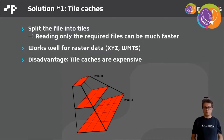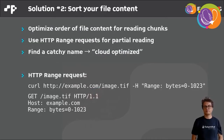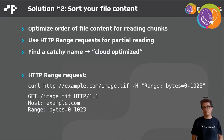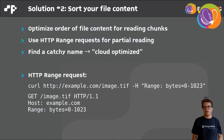So we're looking for another solution, and this is cloud optimization — which is, simply put, just sorting your file content. You optimize the order of the content of your files for reading chunks, for reading parts of your files. For that, there is an HTTP range header which allows for partial reading. And if you solve that, you only have to find a good name for your format.